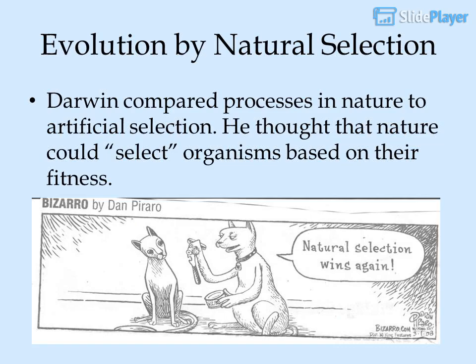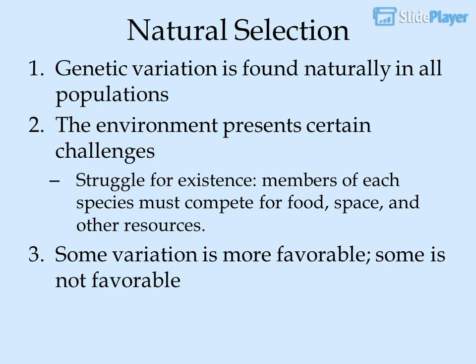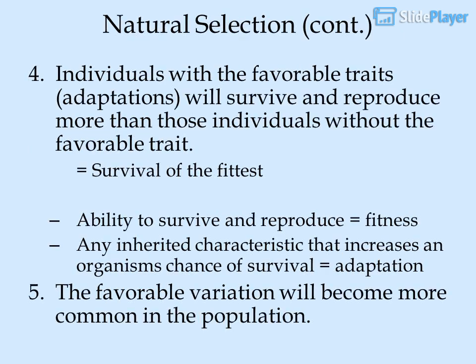Evolution by natural selection: Darwin compared processes in nature to artificial selection, thinking that nature could select organisms based on their fitness. Genetic variation is found naturally in all populations. The environment presents certain challenges — struggle for existence — where members of each species must compete for food, space, and other resources. Some variation is more favorable and some is not. Individuals with favorable traits, called adaptations, will survive and reproduce more than those without the favorable trait — this equals survival of the fittest. Ability to survive and reproduce equals fitness. Any inherited characteristic that increases an organism's chance of survival equals an adaptation.